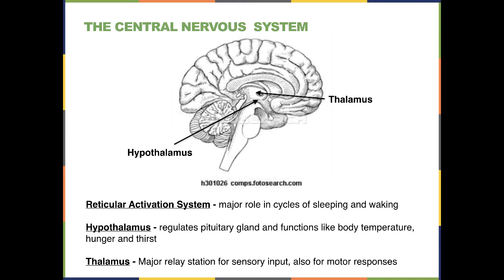The thalamus is a very important part of the brain that serves as a relay station for almost all sensory input, sending it to the various parts of the cerebrum and integrating the motor responses back down into the body. In the lower parts of the brain there is also an area called the reticular activating system, which is responsible for controlling our cycles of waking and sleeping.